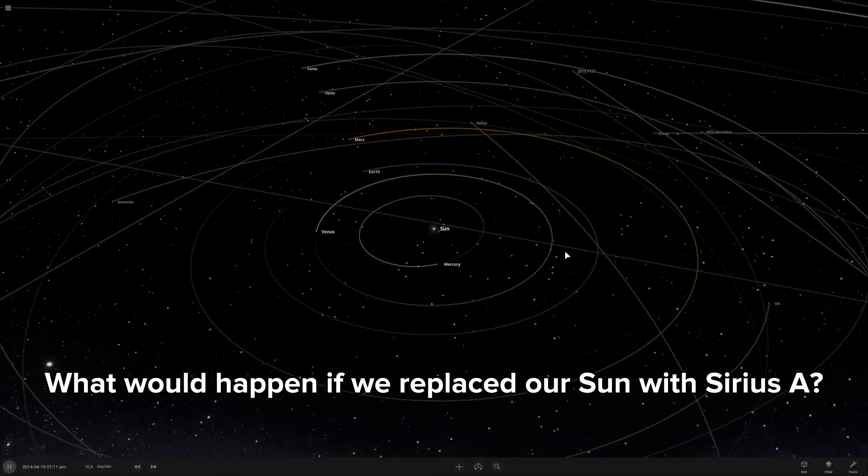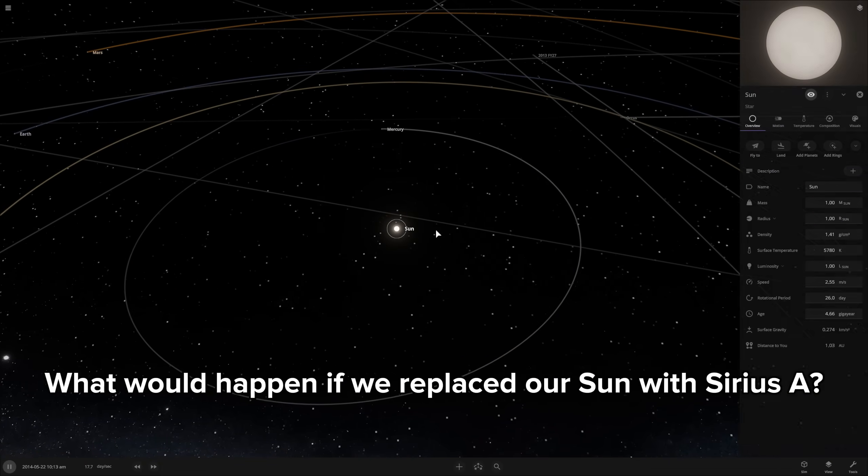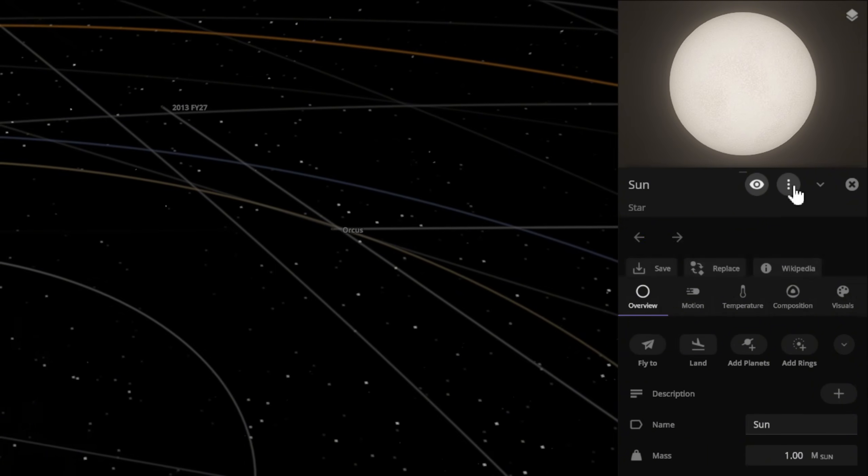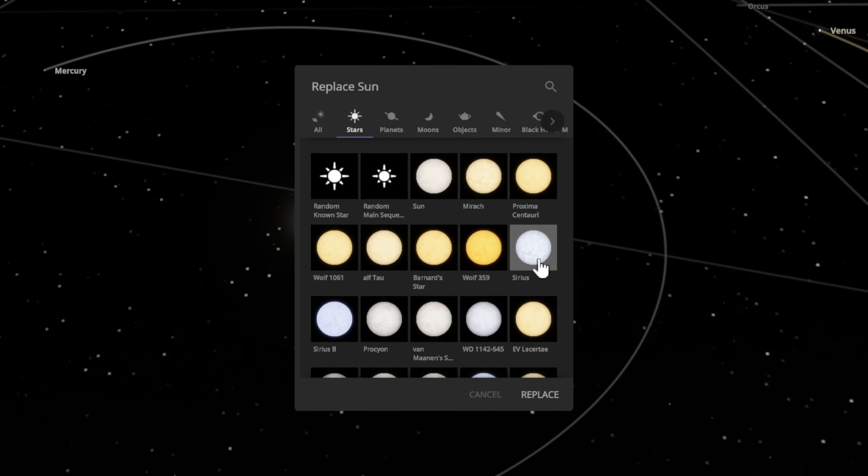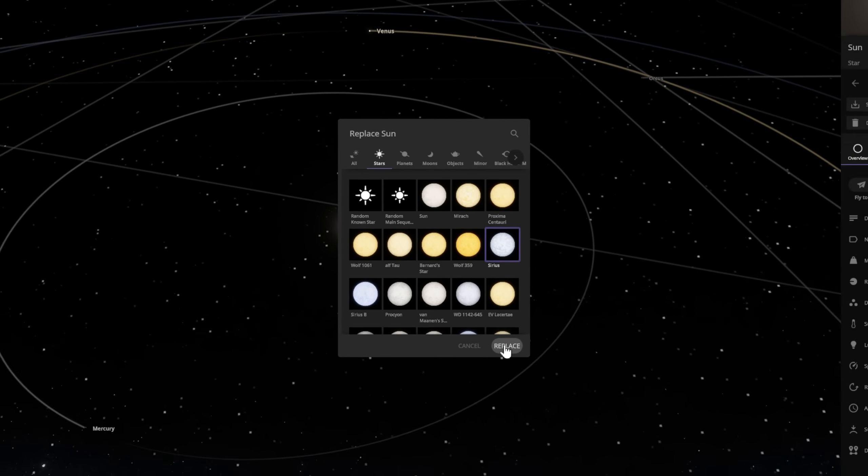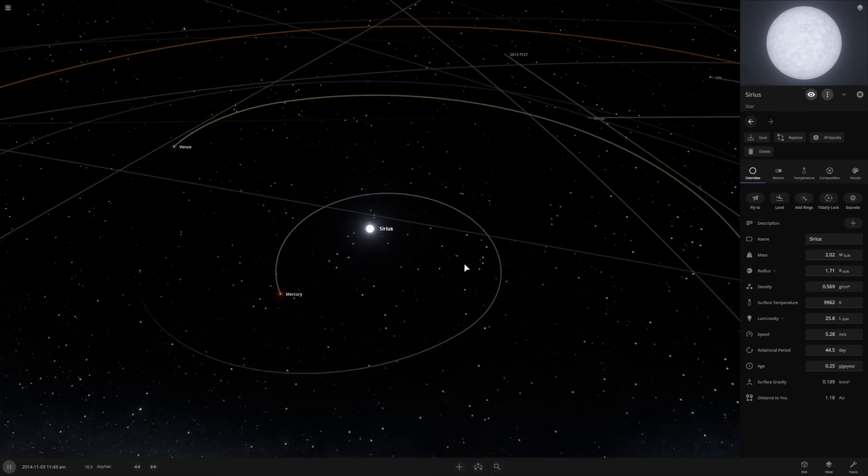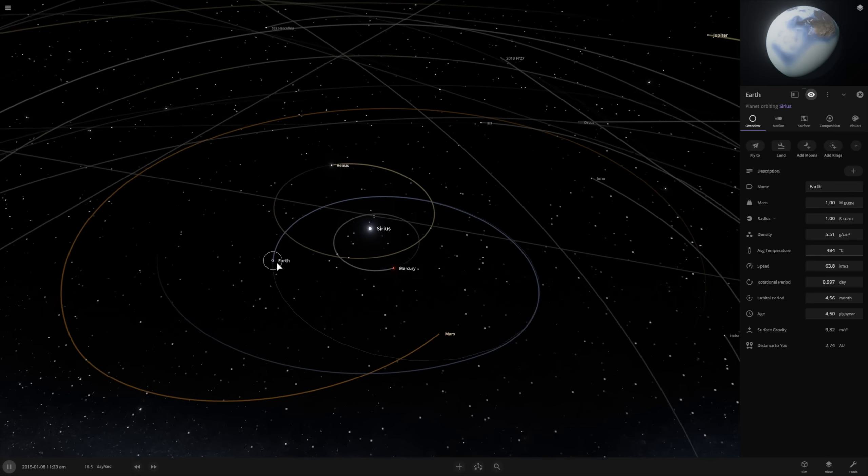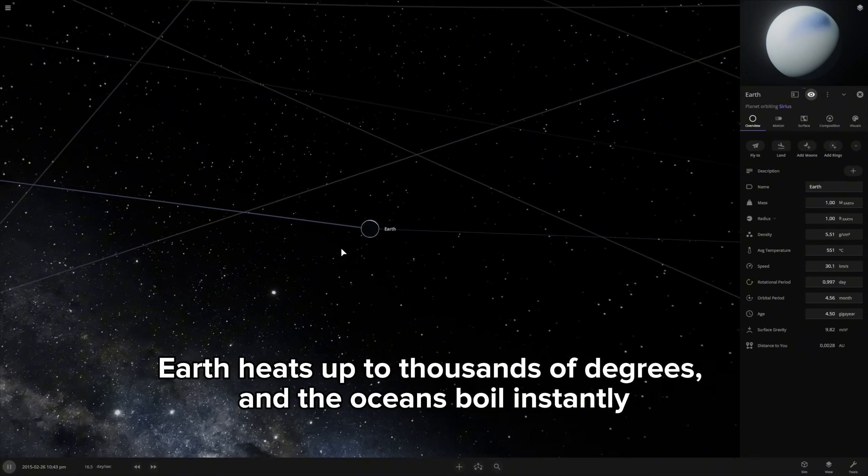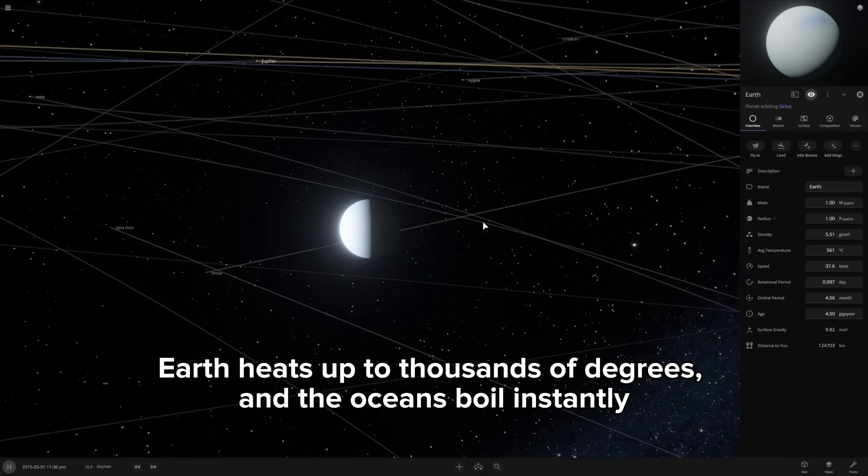What would happen if we replaced our sun with Sirius A? Earth heats up to thousands of degrees and the oceans boil instantly.